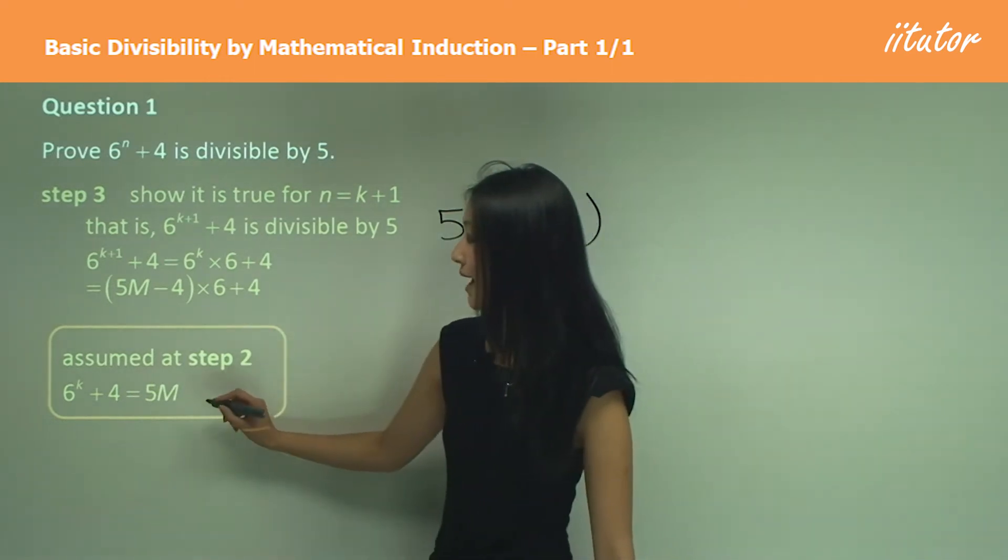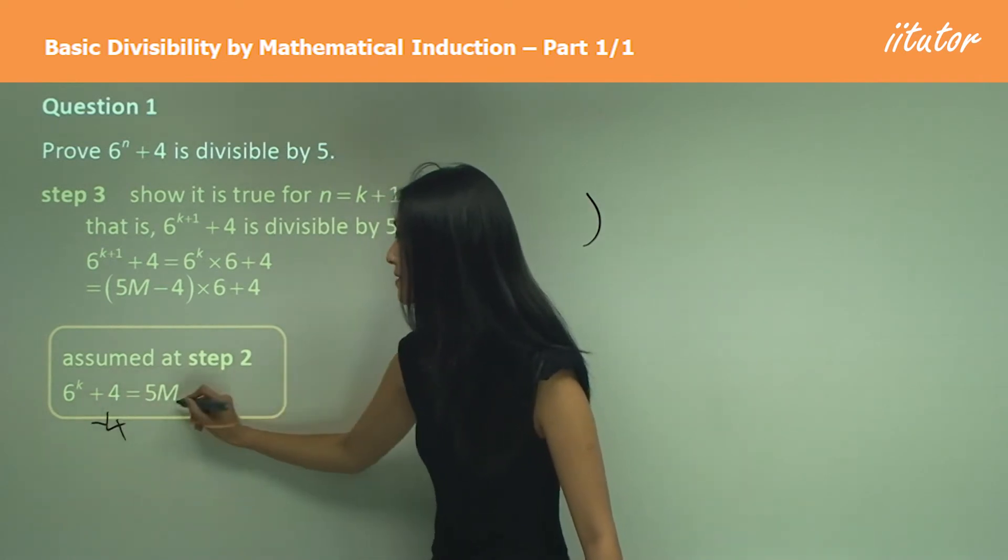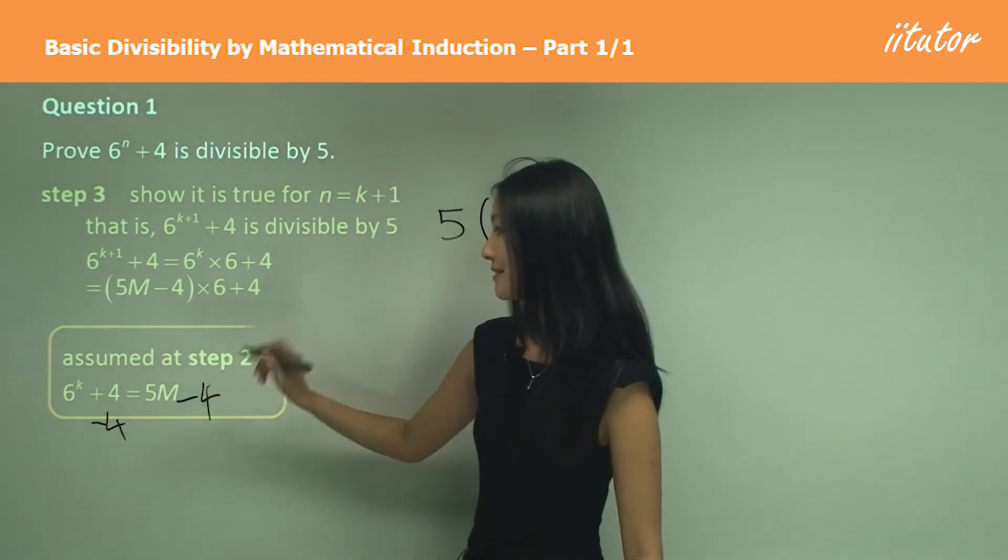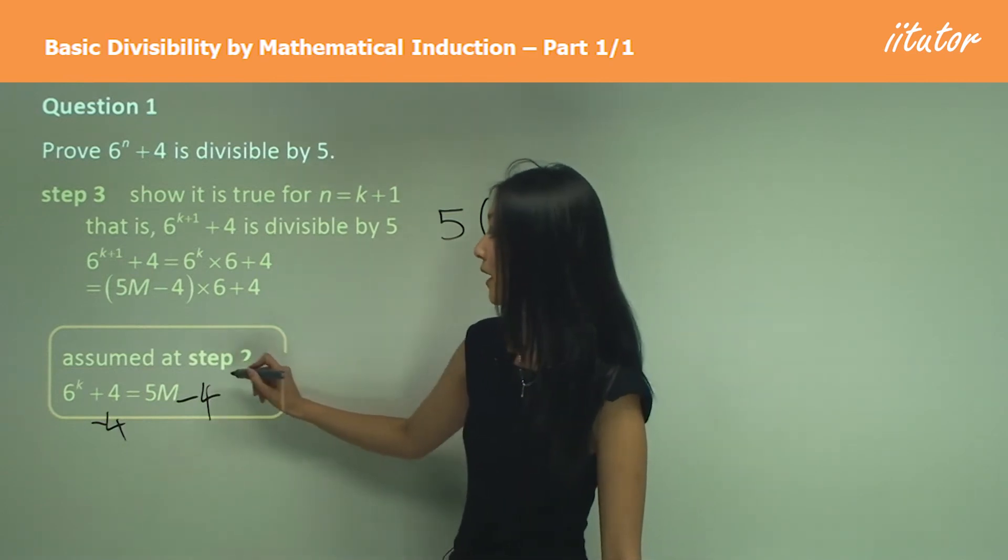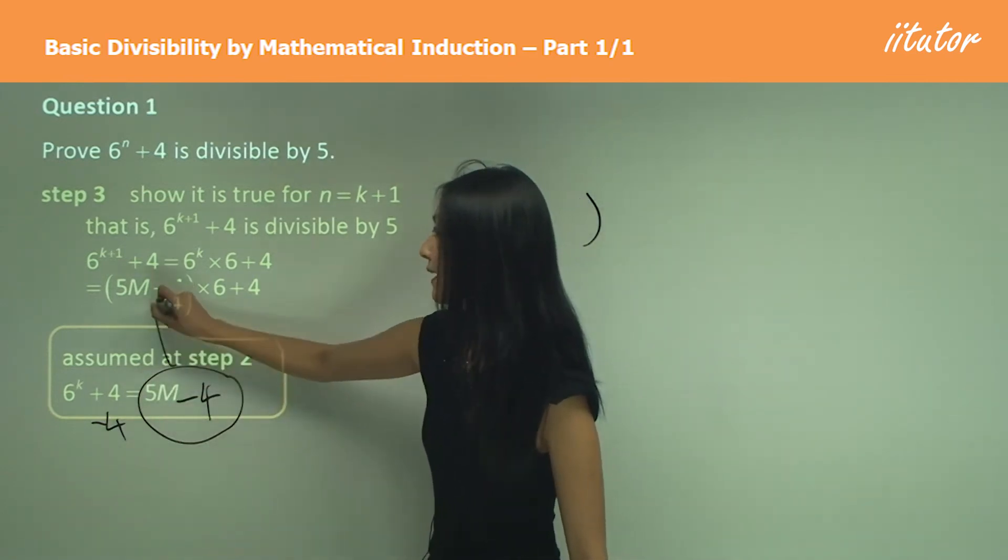So you can see that if I subtract 4 from both sides, I get that 6^k equals 5m minus 4, which is what I've substituted into here.